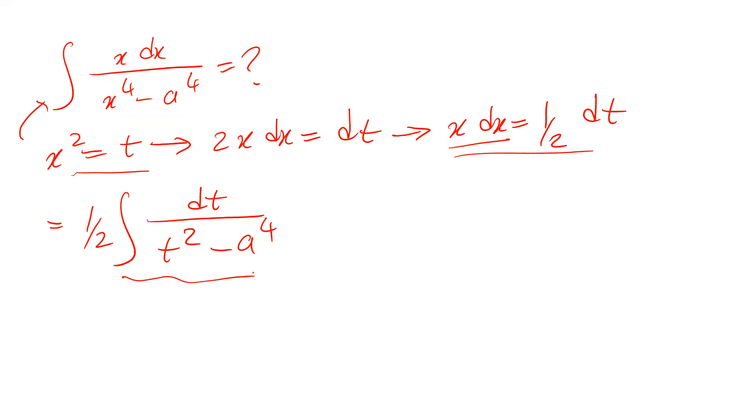And this integral, you can solve it using the formula in the table of integral, that is integral of du divided by u² minus d², d is a constant, is equal to 1/(2d) ln |u - d|/|u + d| + c, which is the constant of the integral.